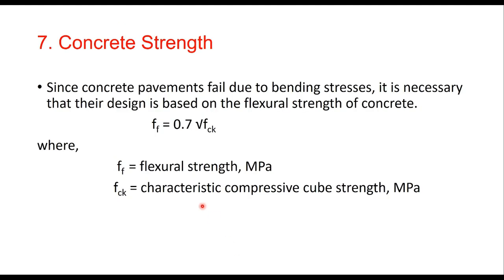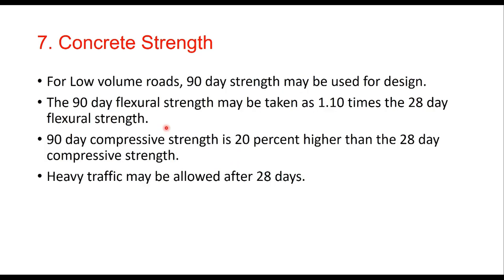Because concrete pavement fails due to bending stress, design should be based on flexural strength of the concrete. The formula used is: flexural strength = 0.7 × √fck, where both values are in MPa. For low volume roads, 90-day strength is used for design, and the 90-day strength is taken as 10% higher than the 28-day flexural strength.